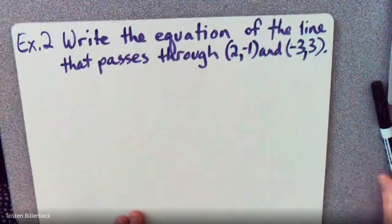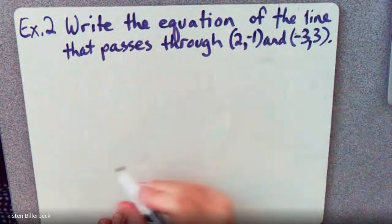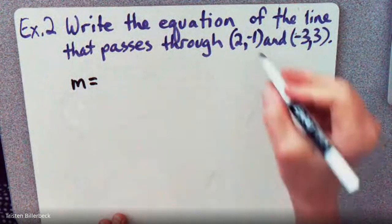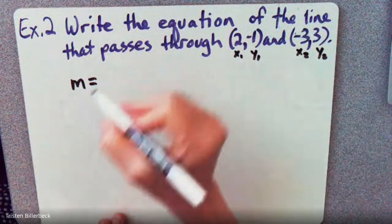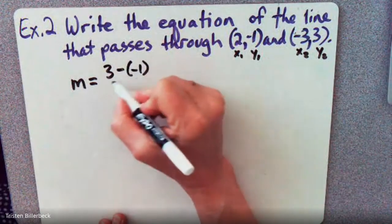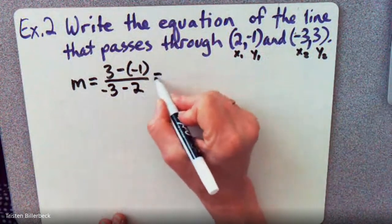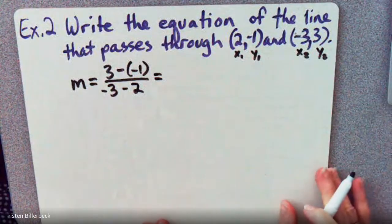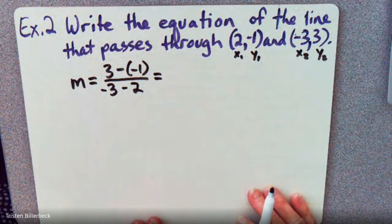So let's go ahead and take a look at something that's less theoretical. We want to write an equation of the line that passes through these two points. So first let's find the slope. Let's label X1, Y1, X2, Y2. So we have 3 minus a negative 1 over negative 3 minus 2. You may wonder why I harp on adding and subtracting integers so much — it's because with this slope formula, you really have to master your integer addition.